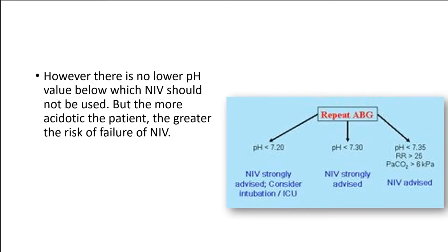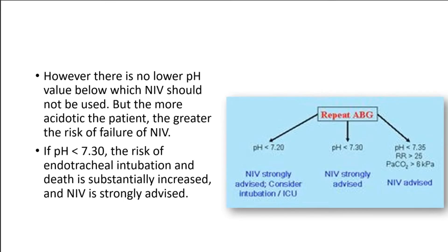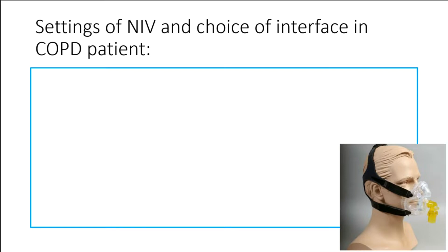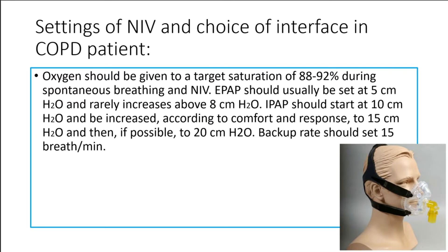However, there is no lower pH value below which NIV should not be used. But the more acidotic the patient, the greater the risk of failure of NIV. If pH is less than 7.30, the risk of endotracheal intubation and death is substantially increased, and NIV is strongly advised. Oxygen should be given to a target saturation of 88–92% during spontaneous breathing and NIV. EPAP should usually be set at 5 cm H2O and rarely increases above 8 cm H2O. IPAP should start at 10 cm H2O and be increased, according to comfort and response, to 15 cm H2O and then, if possible, to 20 cm H2O.